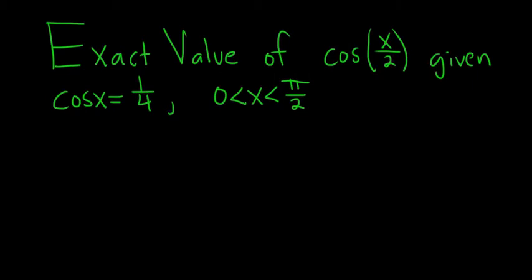Find the exact value of the cosine of x over 2, given that cosine x is equal to 1 fourth, and x is between 0 and pi over 2. Solution.